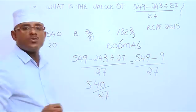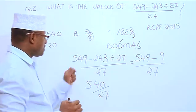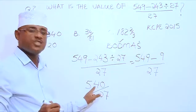540 divided by 27. How many times does 27 go into 540?